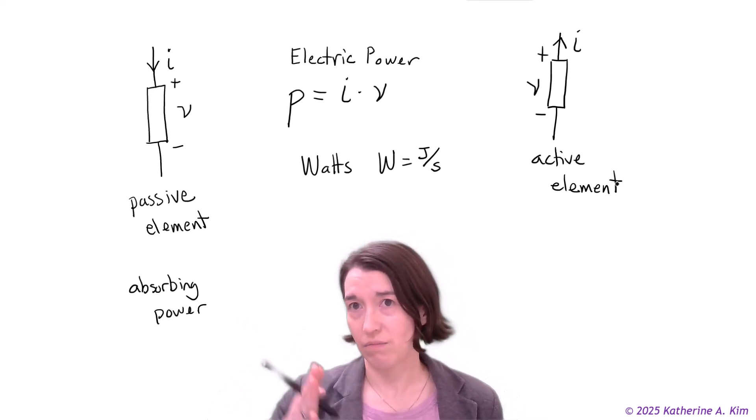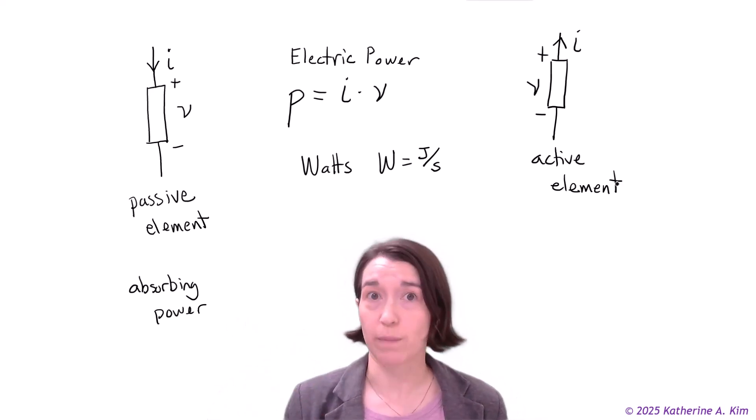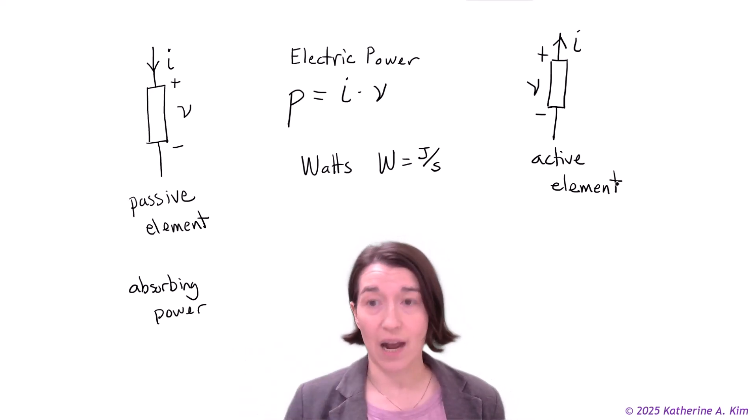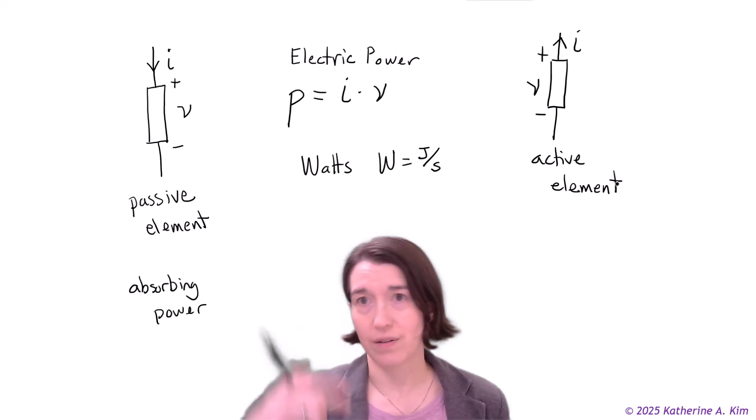And so we would generally say that this is producing power. So if it's producing positive power, or generating power, current is going out of it and then the voltage is the same polarity.